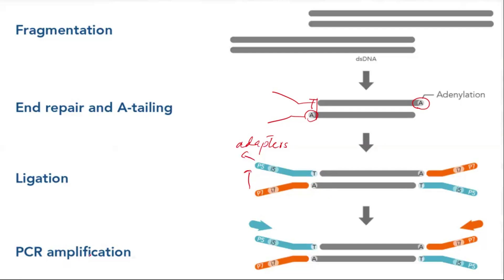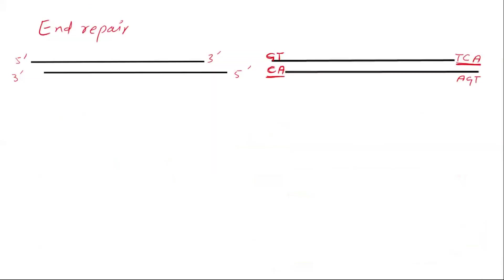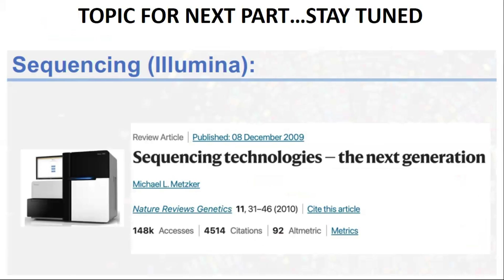After ligation, we perform PCR amplification to increase the number of copies of the complementary DNA library. If we have two samples, PCR amplification is applied equally and in parallel to both — for example, if one is amplified 50x, the other will also be 50x. Sometimes PCR amplification is not required. This concludes the experimental design and workflow of the mRNA sequencing process.